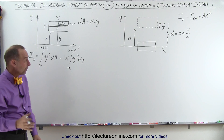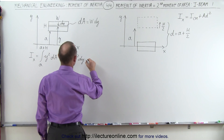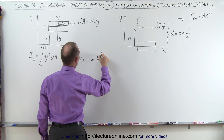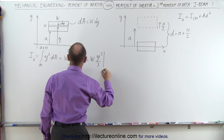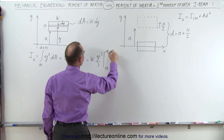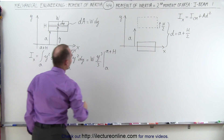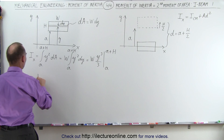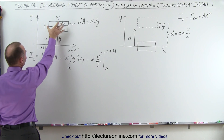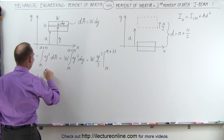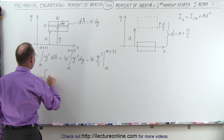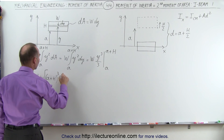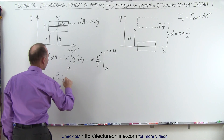So now we'll go ahead and integrate that — that's relatively easy. This is equal to the width times y cubed over 3, evaluated from A to A plus H. Plugging those limits in gives us one-third the width of that section of the I-beam times A plus H quantity cubed, minus A cubed.